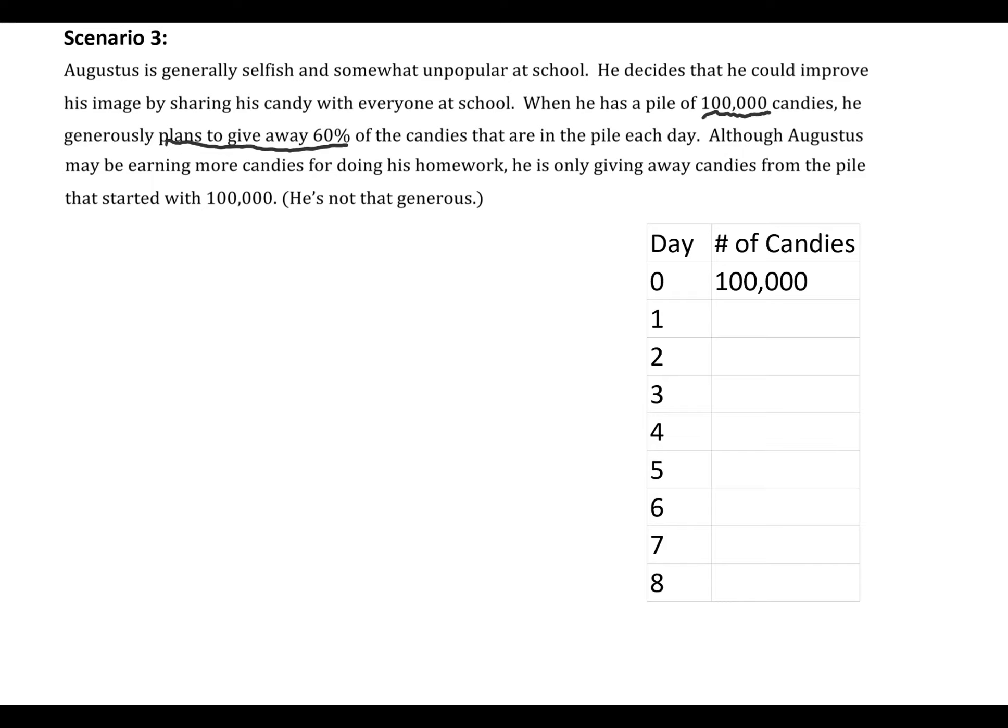So the key piece of information here is that Augustus plans to give away 60% starting from a pile of 100,000. You can see in the table I've already filled in day zero has 100,000 candies. So the key question is: if he's giving away 60%, then what percent is he keeping? Because that's what we're being asked to model. So he's giving away 60%, then he's keeping 40% of the candy. And so 40% as a decimal is 0.4.